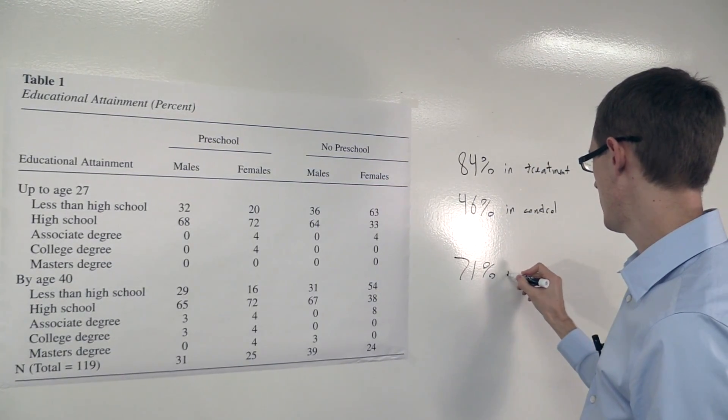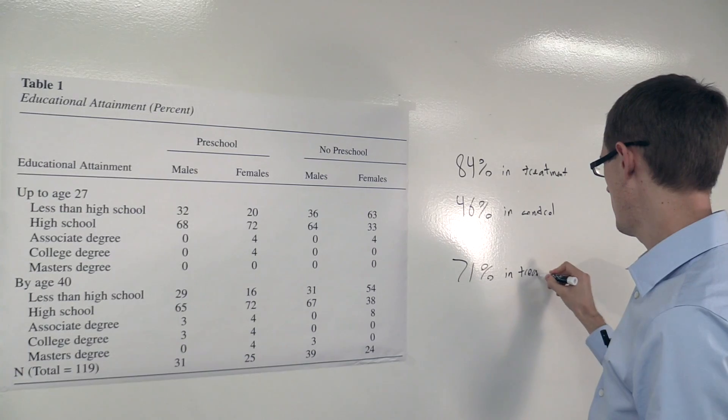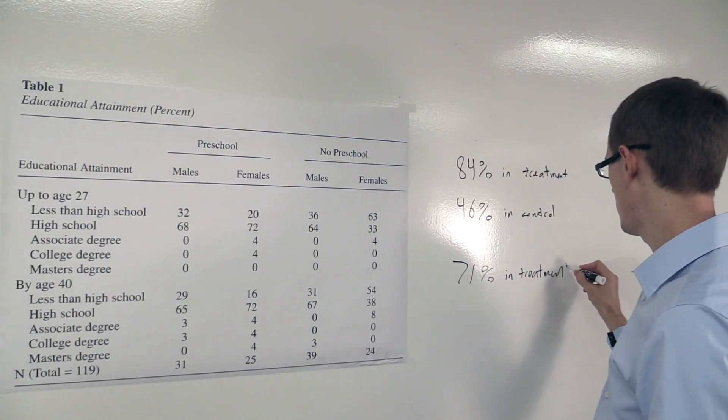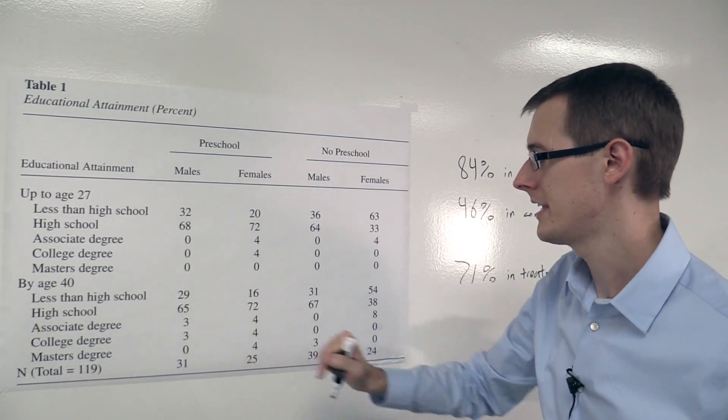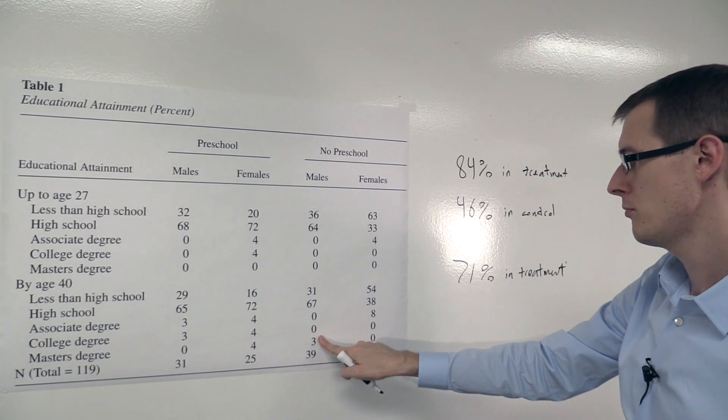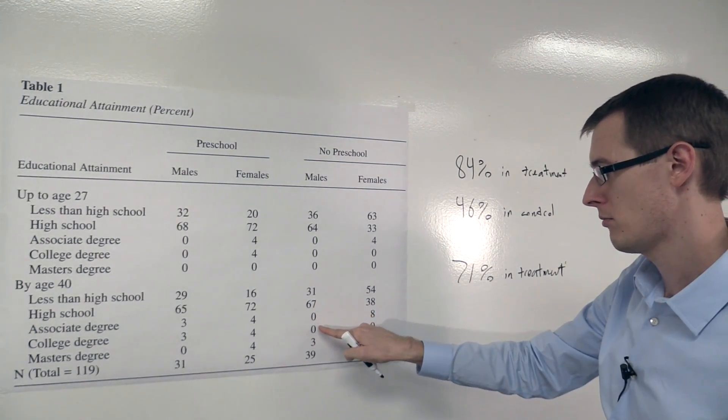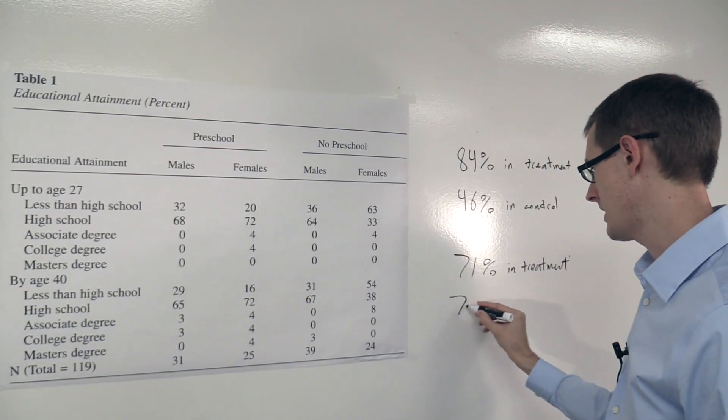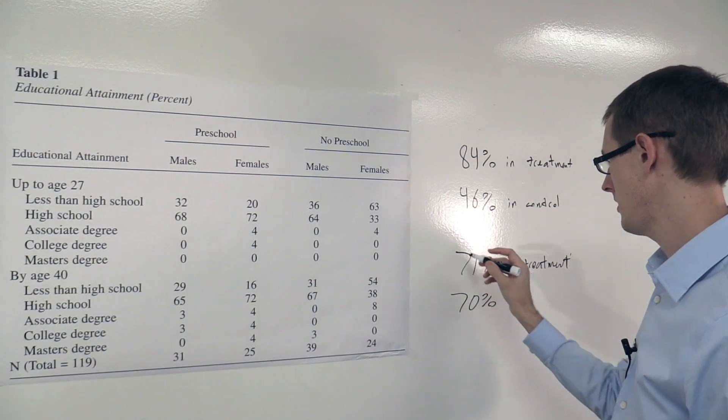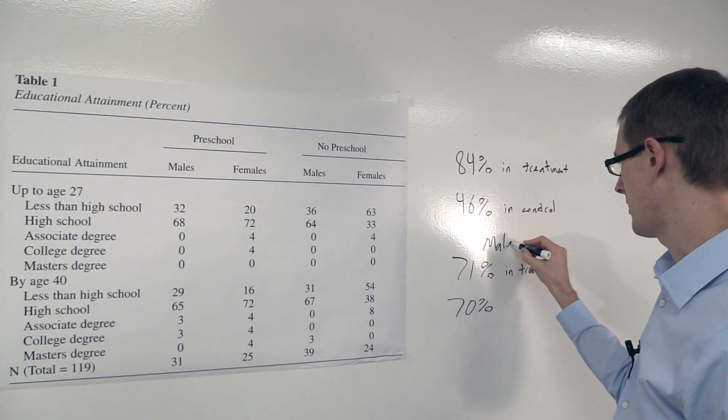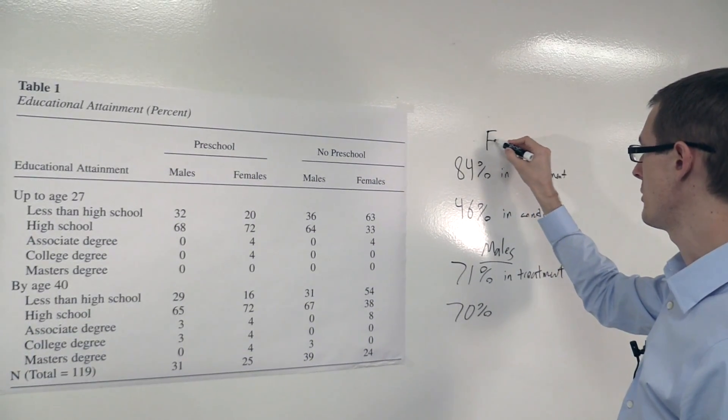We had 71% of males in the treatment group got at least high school. And in the control group it's 67, plus 0, plus 0, plus 3, 70%. Okay, this is for males, this is for females.